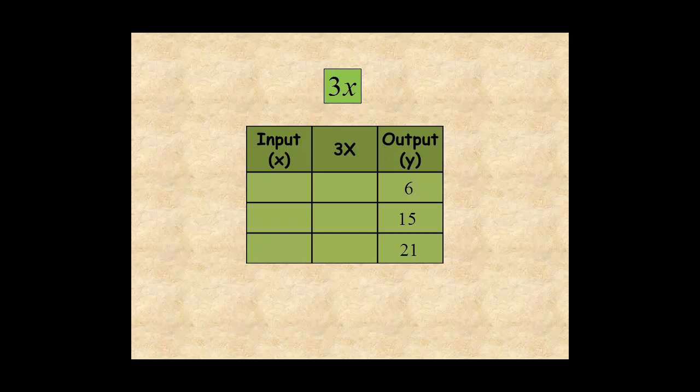So for an output of 6, the input is 2. For an output of 15, the input is 5. And for an output of 21, the input is 7.